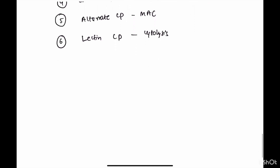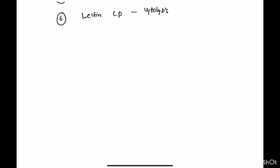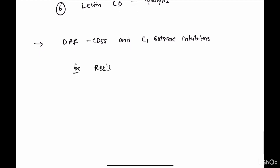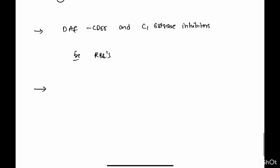If the complement system is continuously activated, it will make holes in our own cells. Decay-accelerating factor (CD55) and C1 esterase inhibitors help to prevent complement activation on our own cells. The take-home point is that the test used to screen for activation of the classic complement pathway is the CH50 test, which is commonly asked in exam questions.